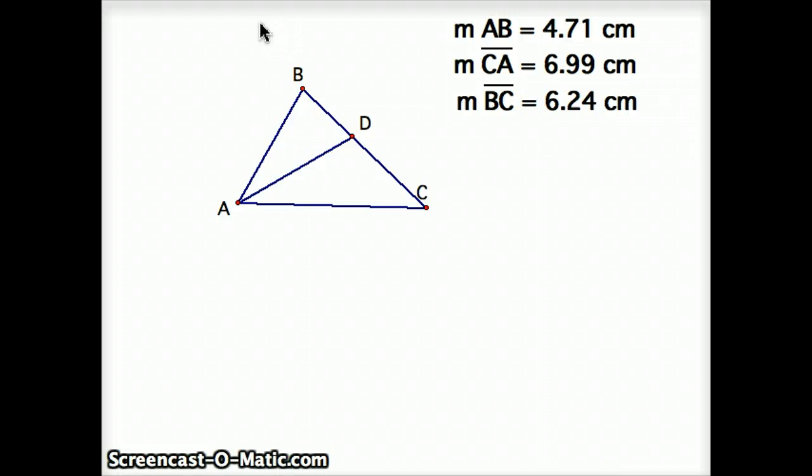It's not that obvious where it cuts that side. It turns out that, in this case, it doesn't cut it in half, but BD is 2.51 and 3.73. The way you could calculate that out is using the angle bisector theorem. The angle bisector theorem basically says that AB over CA always equals BD over DC. Now, this is not an obvious theorem, but I'm going to do a little proof of it in a second.